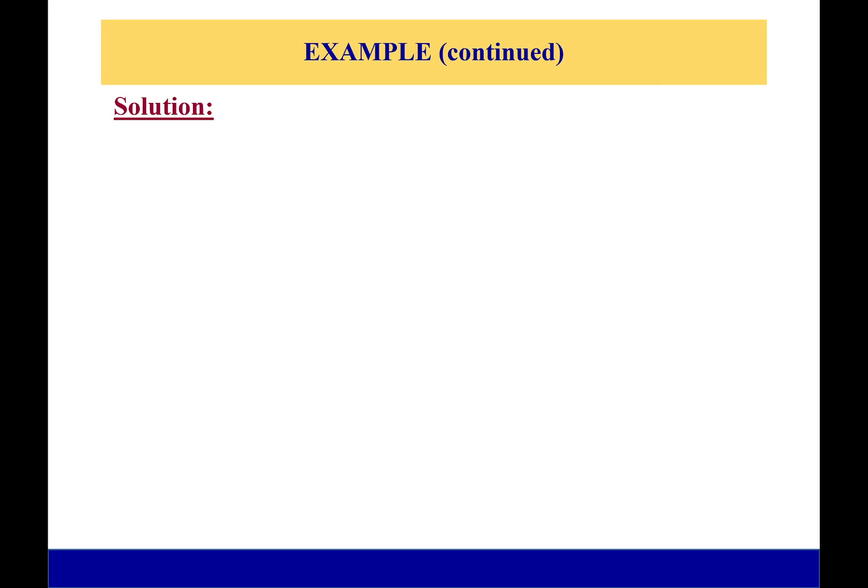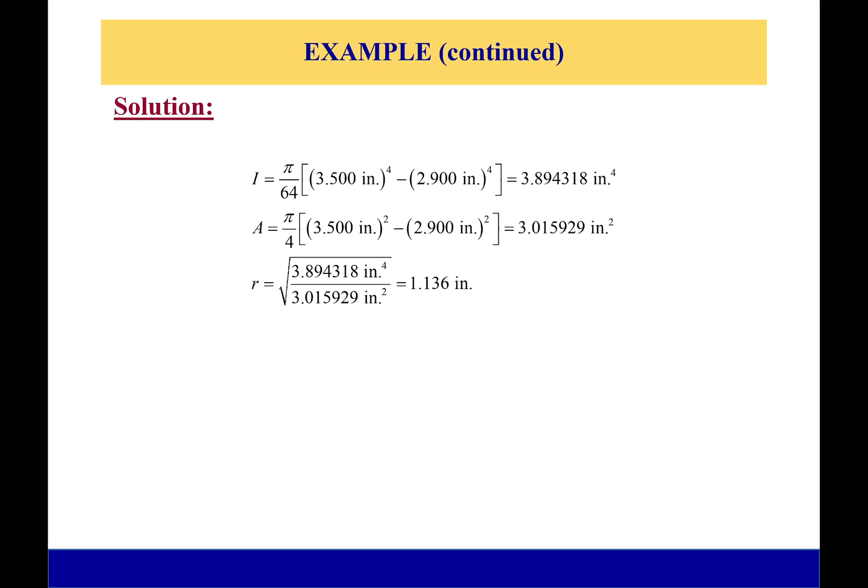So let's solve it. First off, I need to calculate my moment of inertia. How do I do that? Well, we have π/64 times our diameter to the fourth—that is the moment of inertia for a circle.